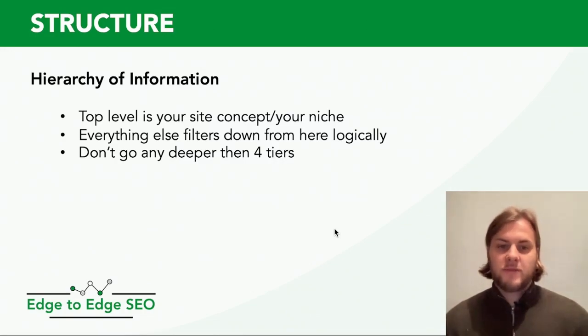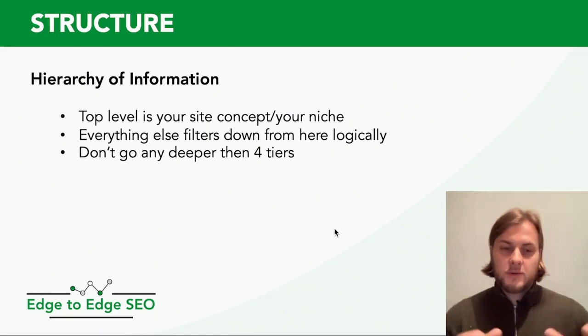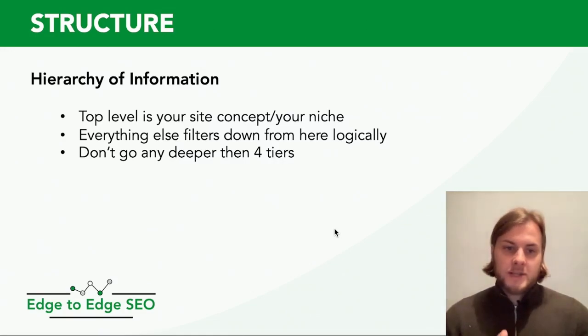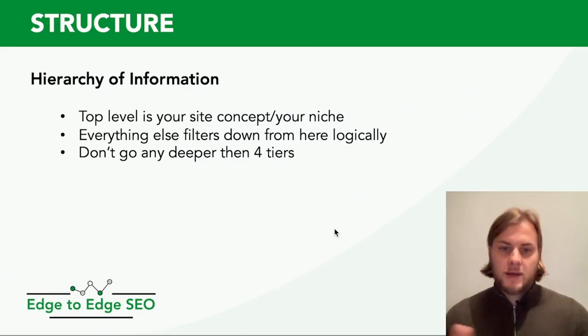Everything else filters down from there in a logical order. For example, if you're a flooring company, you might offer carpets, LVT, wood, and laminate. Flooring is the top-level site concept and everything else filters down below that. If you're a wood flooring company, you'd go wood flooring, then parquet flooring, herringbone flooring, and so on.